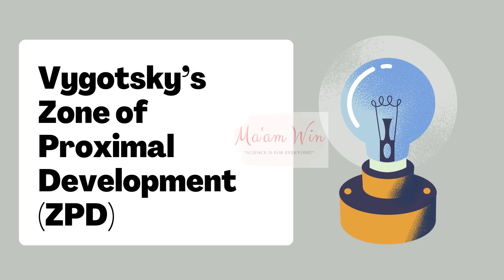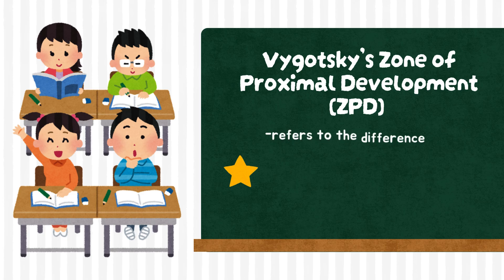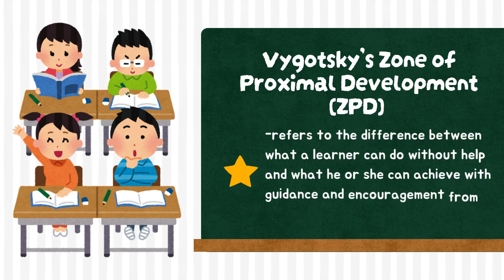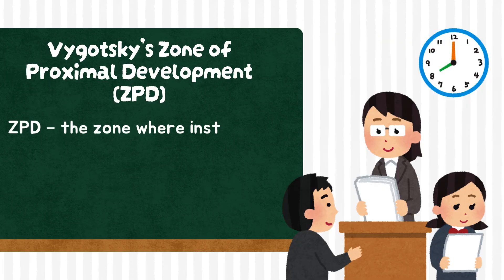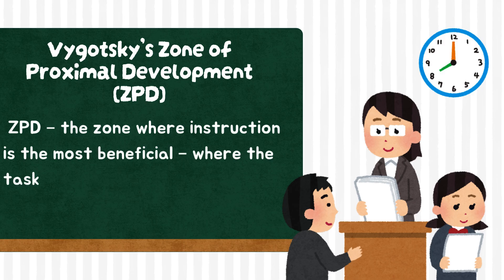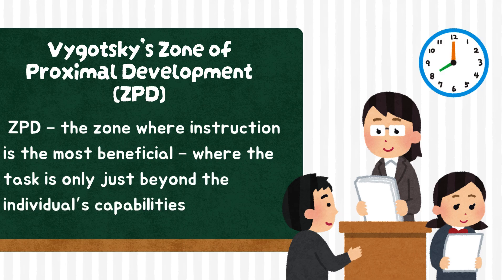Let's proceed to Vygotsky's Zone of Proximal Development, or the ZPD. This refers to the difference between what learners can do without help and what they can achieve with guidance and encouragement from a skilled partner. The term proximal suggests the area where the learner is close to grasping the knowledge or skills to be learned. Learning occurs best in the ZPD — the zone where instruction is most beneficial and the task is only just beyond the individual's capabilities.